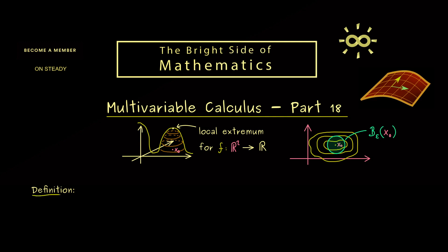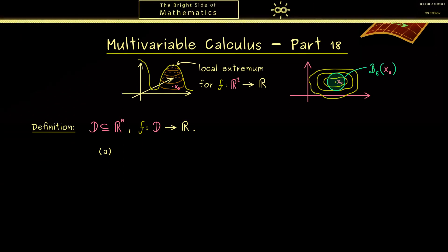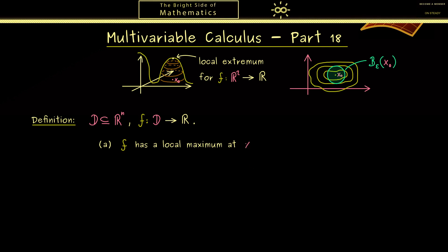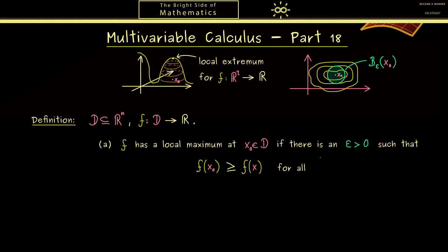Of course we will write that down in a definition. We fix the domain d in Rn, and also a function f defined on d mapping into R. Usually we would have a continuous function. Then let's define the term local maximum: we say that f has a local maximum at the point x0 in d if we find an epsilon neighborhood around x0 such that f(x0) is greater or equal than all other values — that is, for all x in d intersected with B_epsilon(x0). This is exactly the picture from above, restricted to the domain d.